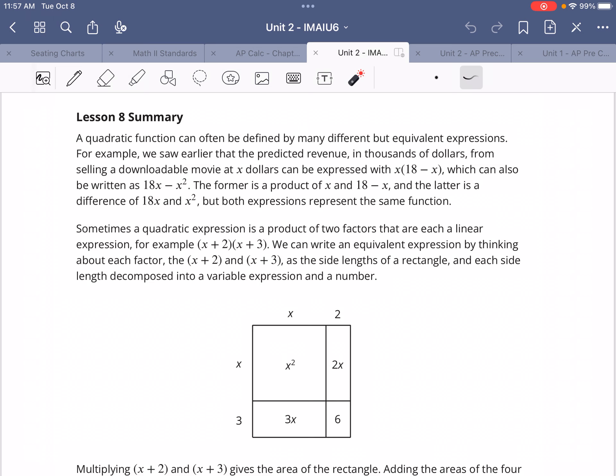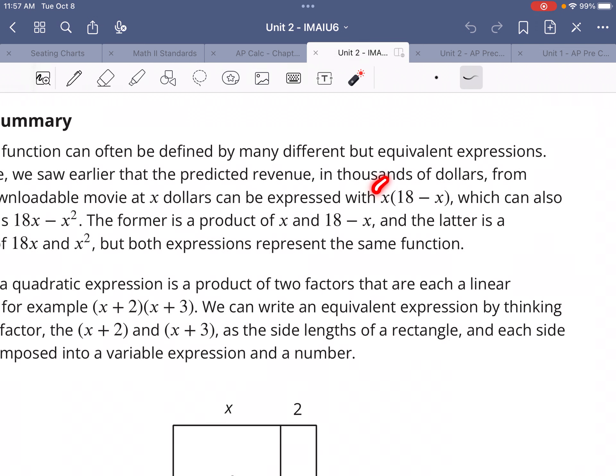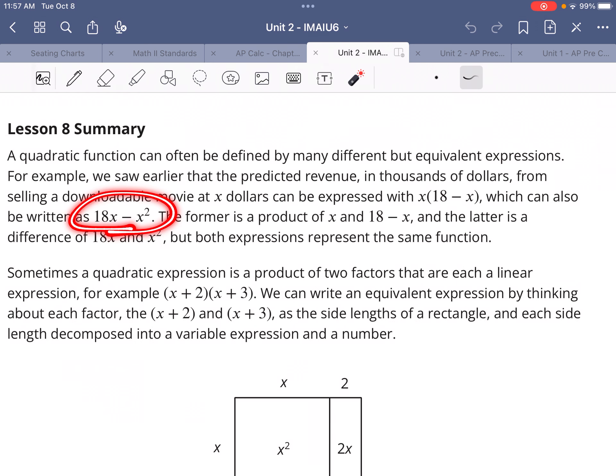For example, we saw earlier that the predicted revenue in thousands of dollars from selling a downloadable movie at x dollars can be expressed with x(18 - x). That's the price per download and the 18 minus x represents how the number of downloads would change as you increase the cost. Then you can use the distributive property to work out this multiplication and get 18x - x². Those are equivalent expressions. They produce the same results even though they look a little bit different.